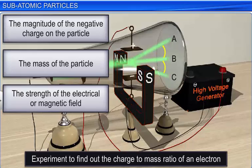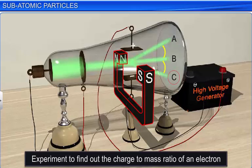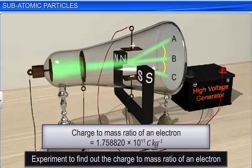When only an electric field is applied, the electrons deviate and hit the cathode ray tube at point A. Similarly, when only a magnetic field is applied, electrons strike at point C. By controlling the deviation of electrons by varying the strength of electric and magnetic fields and accurately measuring the resultant deflections, he calculated the charge-to-mass ratio of an electron, which equals 1.758820 × 10¹¹ coulombs per kg.